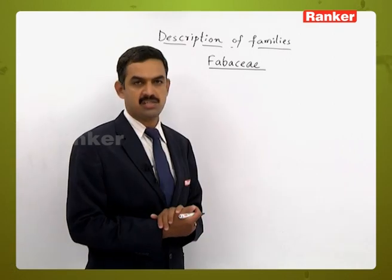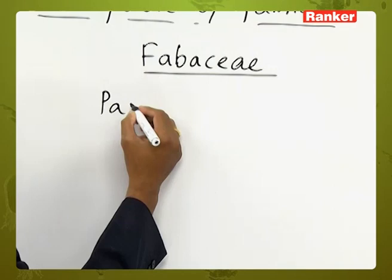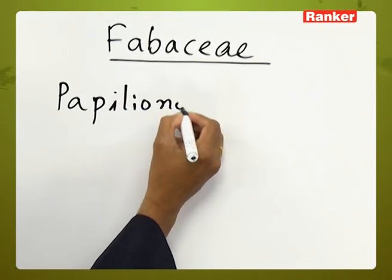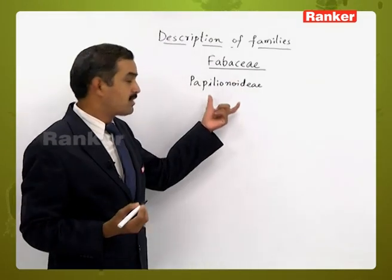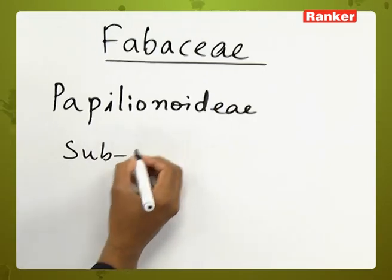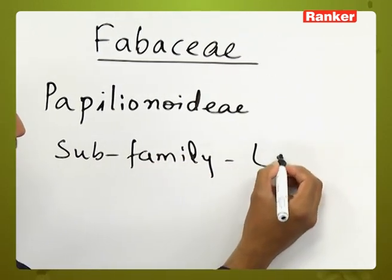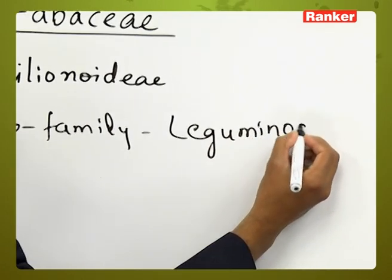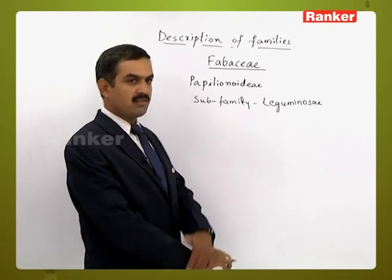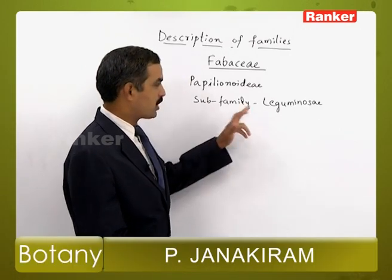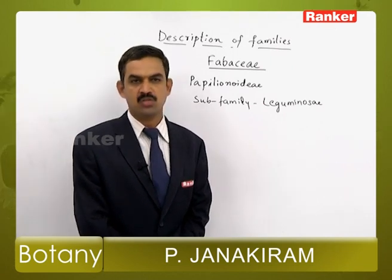So let us take the first one, the Fabaceae family. Initially, the Fabaceae family was called as Papilionoidae, and this was a subfamily under Leguminaceae. This classification where Papilionoidae is a subfamily of Leguminaceae was given by the natural system of classification proposed by Bentham and Hooker.